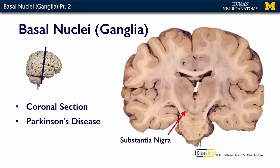Moving back even further in the brain to about this level, we've got a little more of the brainstem in this section — here's our pons. Again, we have just a little bit of the caudate left. Here's just a little bit of the putamen on this side of the brain. We can no longer see the globus pallidus, but we see a very beautiful substantia nigra here and here.